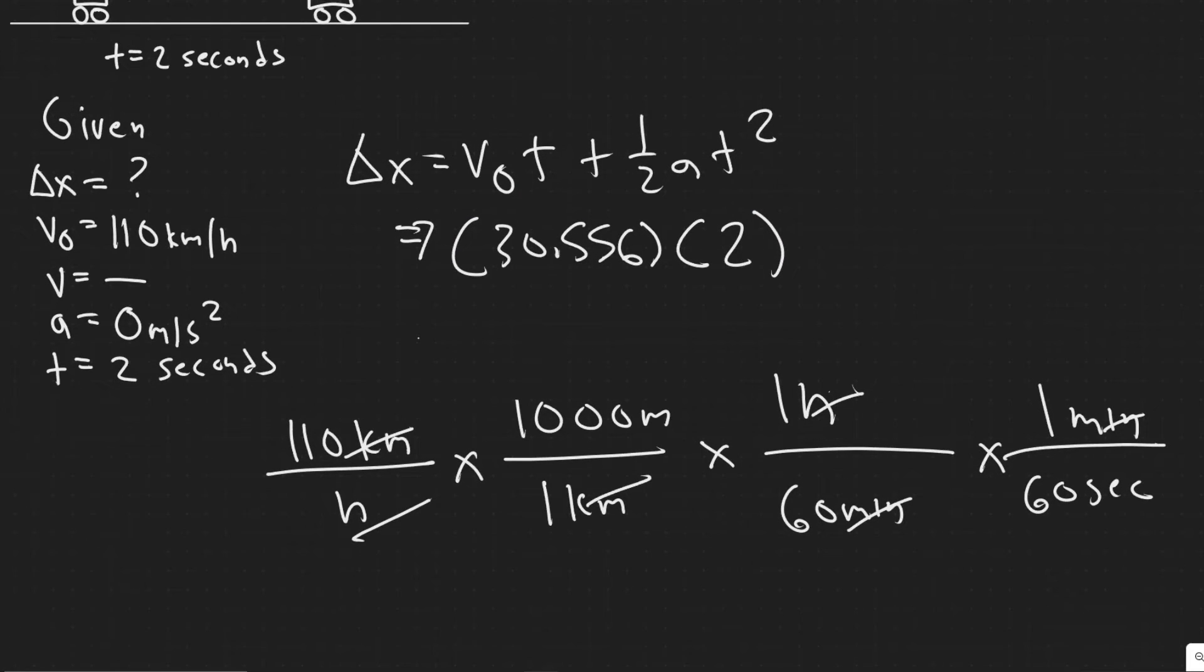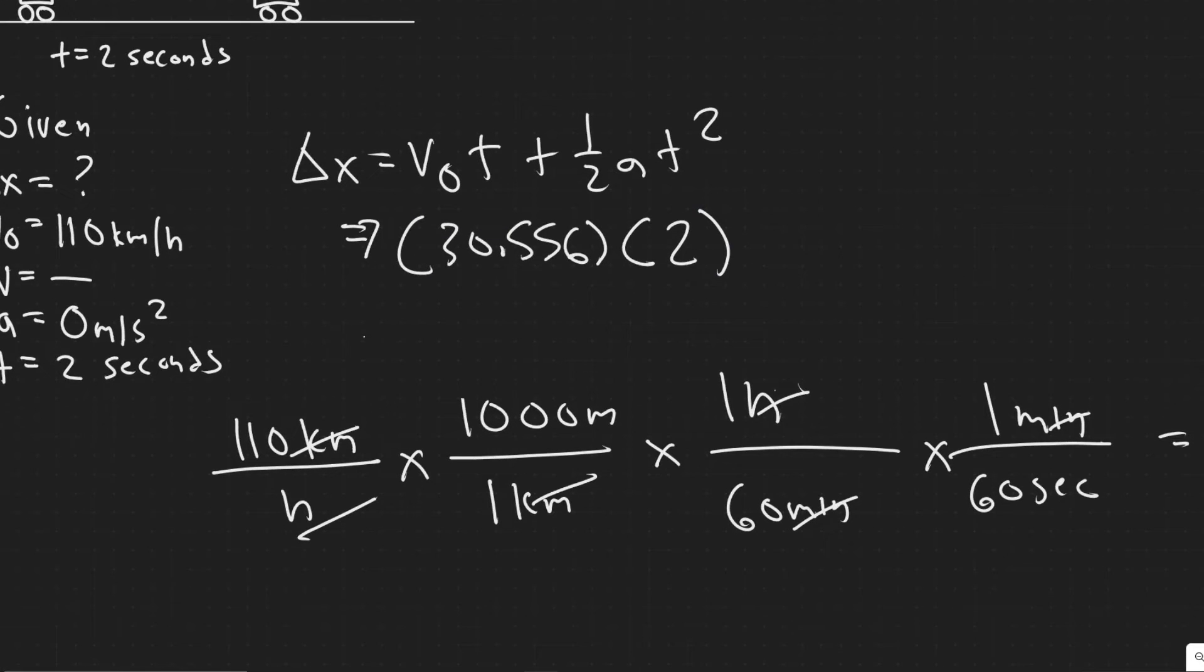And that'll give you your distance. And you can see that because this is in meters per second. And this is in seconds. So your seconds will cancel, and you'll just be left with meters, which is a distance unit. So performing this now, you're going to get 61.1111 repeating, I use the exact value. So you can just round it to about 61 meters.